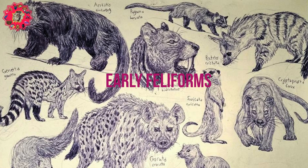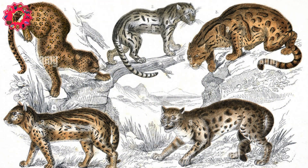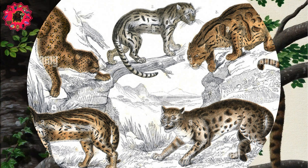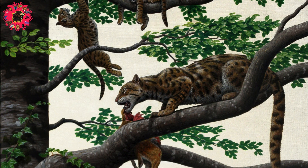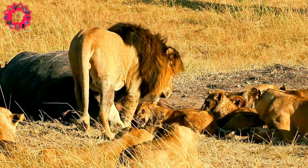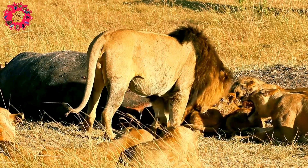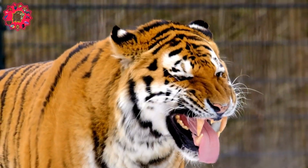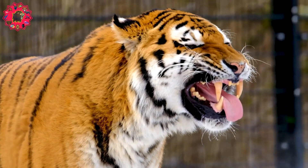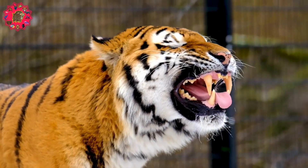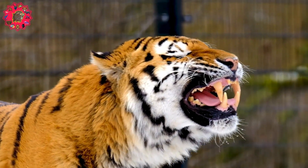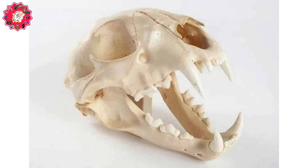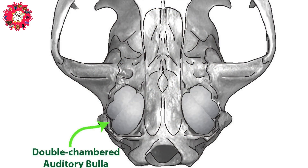Early Feliforms. Early feliforms retained an arboreal lifestyle, setting them apart from the more mobile and ground-dwelling caniforms. Feliforms also stuck to a more carnivorous diet, as opposed to caniforms like bears, which could lead a more omnivorous lifestyle. In addition to these general lifestyle differences, they could also be morphologically differentiated from caniforms by having shorter snouts, more specialized carnassial teeth, and the presence of a double-chambered auditory bulla, bony capsules found within the ear.